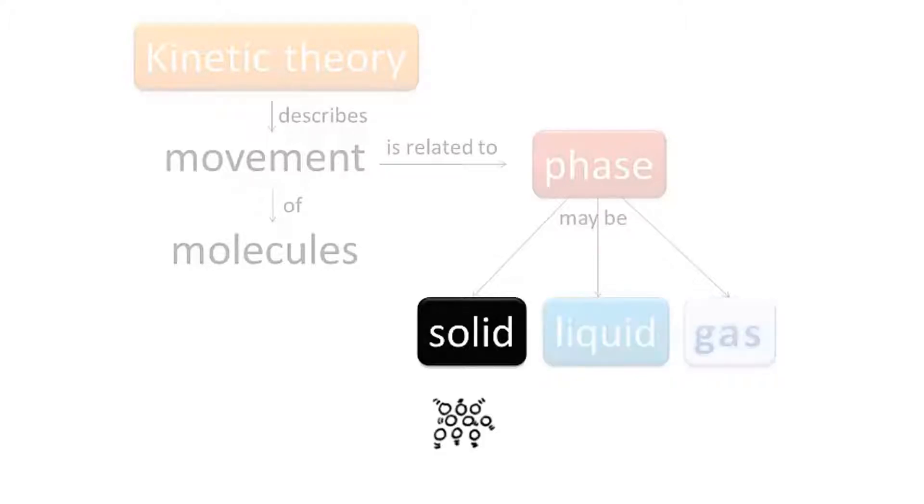In the solid phase, according to kinetic theory, particles just vibrate and they have very little energy. They don't have much kinetic energy, meaning they don't move very fast, and they don't have much potential energy. They're not very far apart from one another. The molecules are close together.